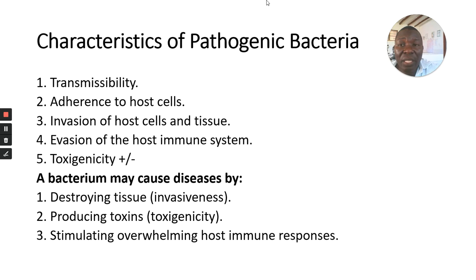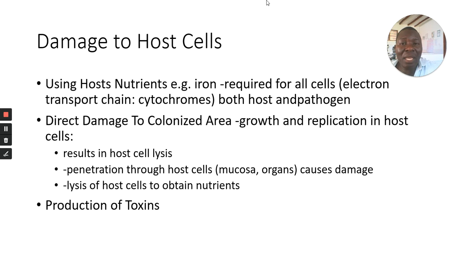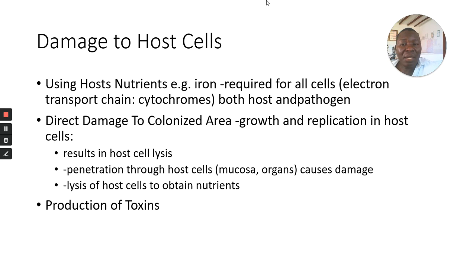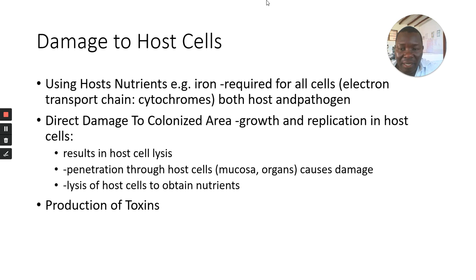Bacteria can also damage host cells by using host nutrients. For example, iron is quite an important element that aids in the electron transport chain through the cytochromes, and both the host and the pathogens require iron. Direct damage through colonization and replication results in host cell lysis. Penetration through the host cell mucosa causes damage as well. Lysing the host cell to obtain nutrients means the cell dies and the bacteria gets the nutrients. Toxins — both exotoxins and endotoxins — can be within the cell membrane of the bacteria or produced extracellularly.